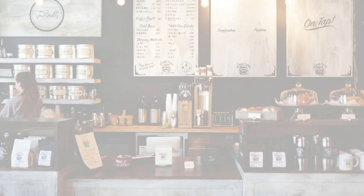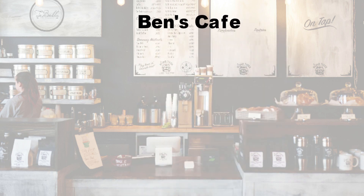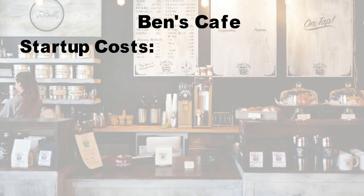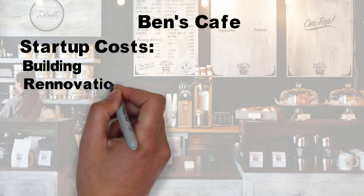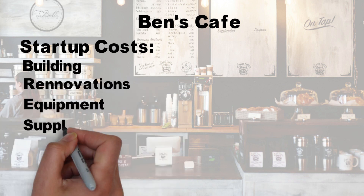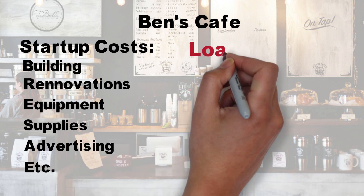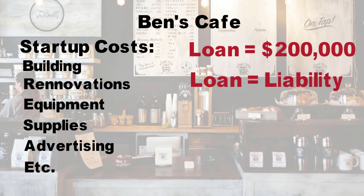Let's use an example to better understand what that means. From our prior episodes, we know that Ben started a coffee shop. Ben opened his coffee shop five years ago. He put his entire savings into this company, but that wasn't enough to pay for the shop, the renovations he needed to make to the building, all the equipment and supplies to get started, advertising, and other startup costs. In addition to his savings, Ben took out a $200,000 business loan. This loan is a liability.